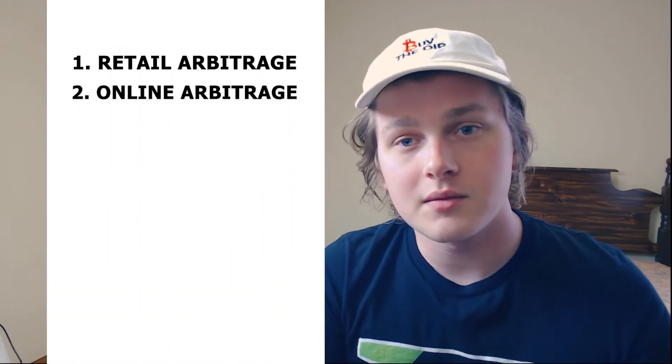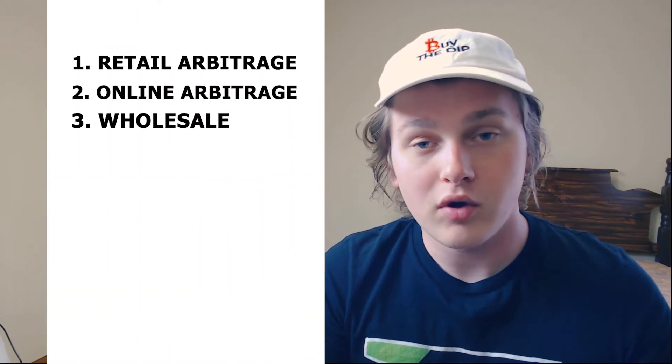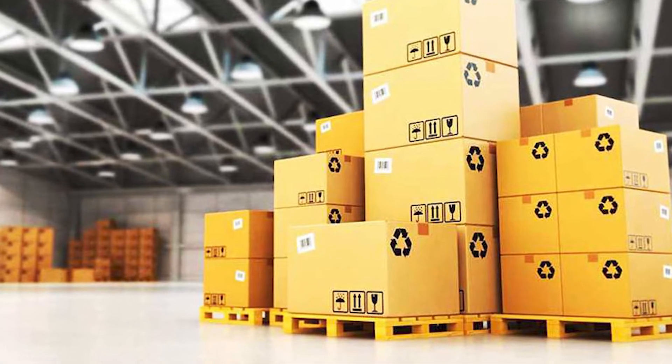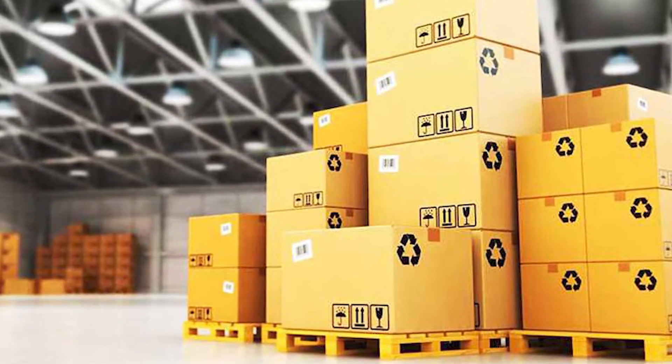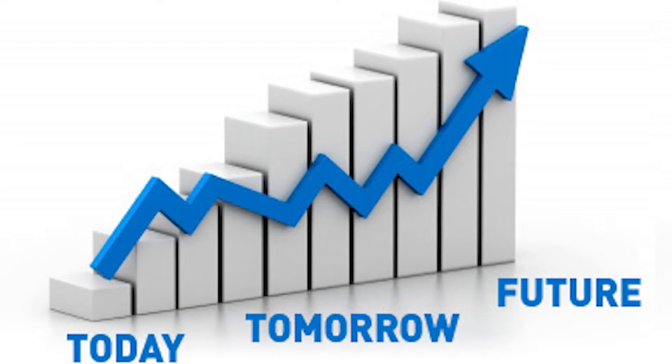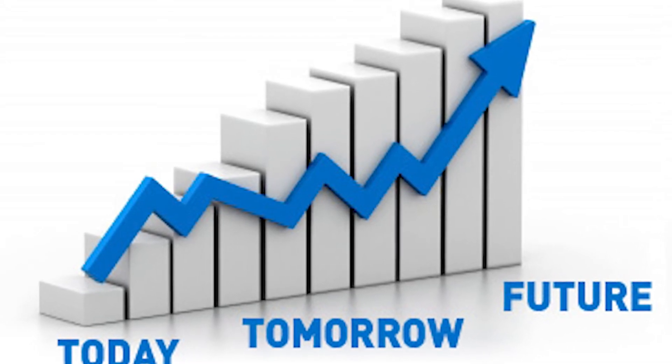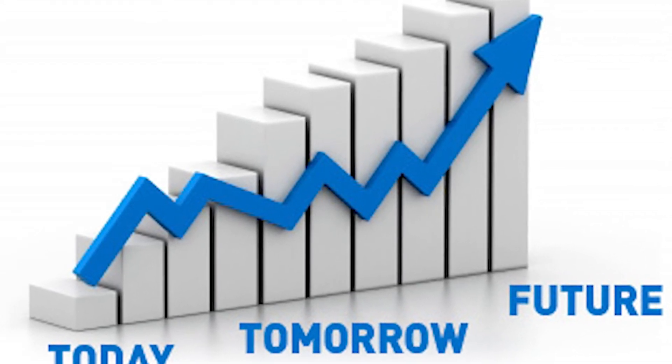The third business model is going to be wholesale. This is where you're buying products in bulk from a distributor or sometimes even directly from the brand, and then you're reselling those on Amazon. Wholesale can be more expensive to get into, and I would recommend getting your feet wet with one of the traditional arbitrage methods first and then starting to dive into wholesale. I do some wholesale, but it's a pretty small percent of my business compared to online arbitrage. Long-term, I'll be transitioning more into wholesale because I see it as a better opportunity to scale long-term.